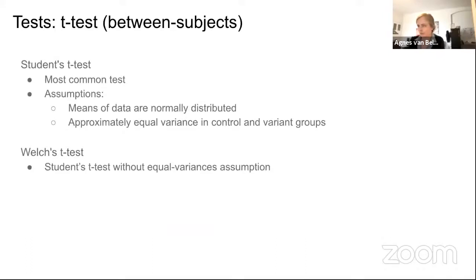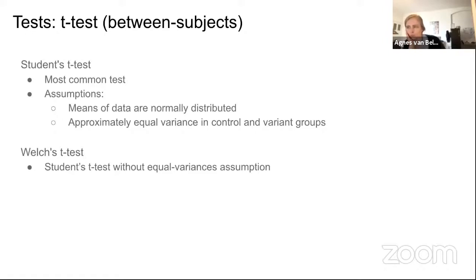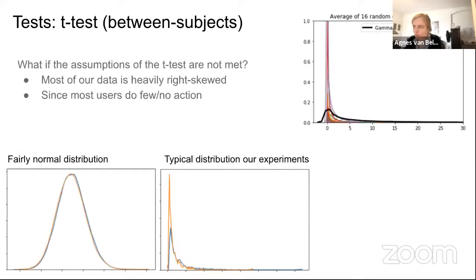Now to the actual testing. One of the most commonly used tests for between-subjects design is the t-test. The Student's t-test assumes the means of the data are normally distributed and there is approximately equal variance in control and variant groups. The Welch's t-test is basically the same but drops the equal variance assumption. Still, both require the means to be normally distributed, which was a concern because a lot of the experimental data was extremely right-skewed with a very long tail.